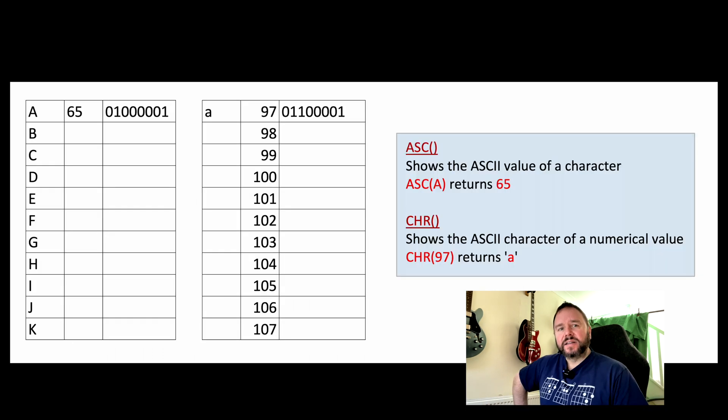The reason I think the exam board want you to know that character sets are logically ordered is because they may give you a value and then expect you to be able to work out subsequent values. For example, they may give you the value for capital A and then expect you to work out programmatically what a G would be. They also need you to understand this code.